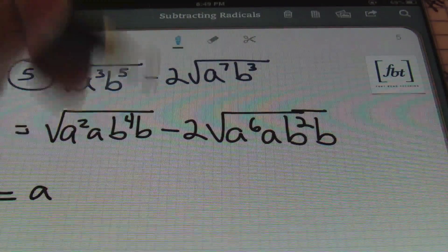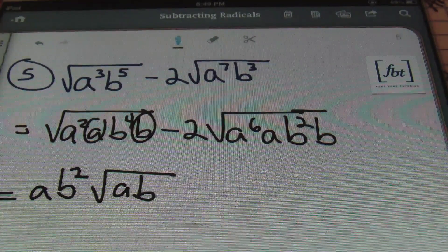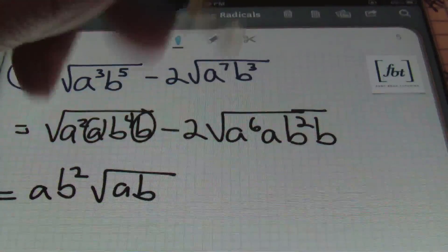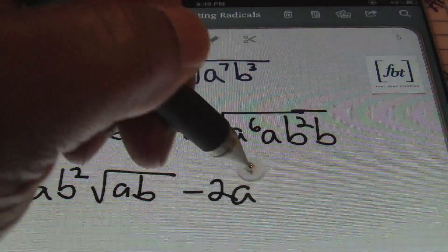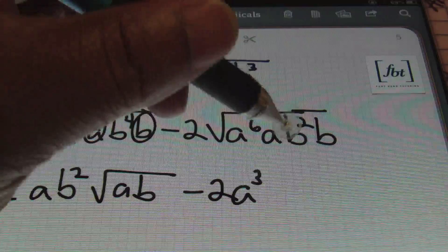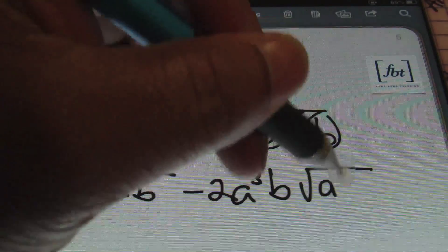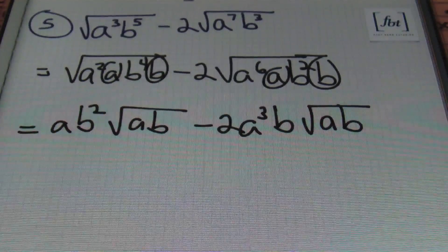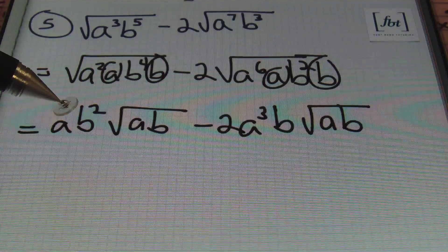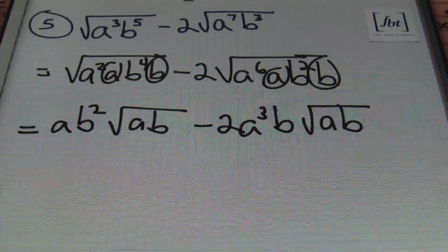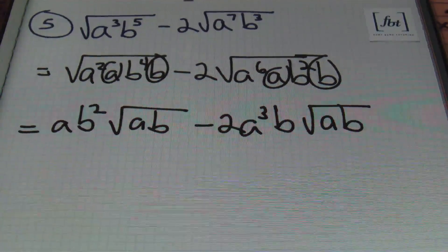Taking the square root of a² gives a; the square root of b⁴ is b², leaving the square root of ab inside the radical. For the second term, dividing the exponent by the index: 6 divided by 2 is 3, giving a³. The square root of b² is b. What's left under the radical is ab. Notice we do not have like terms — the radicals are identical, but the variables outside (ab vs. a³b) are not identical, so we can't subtract directly.